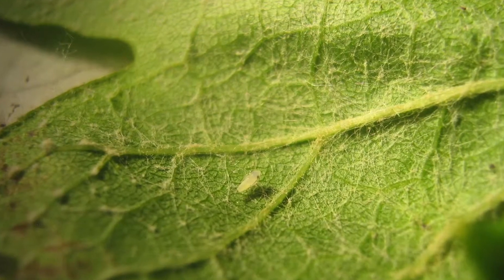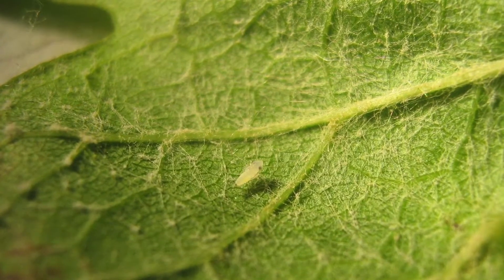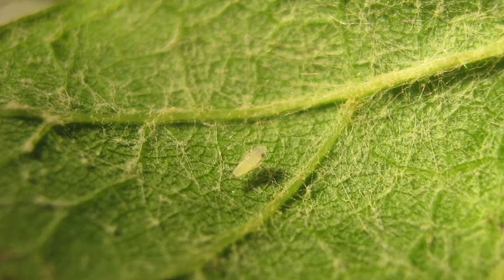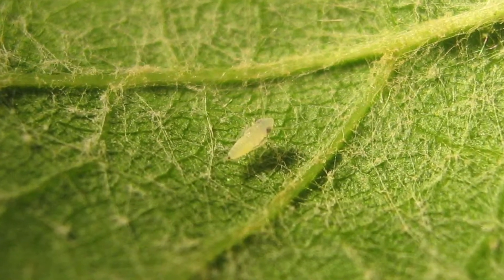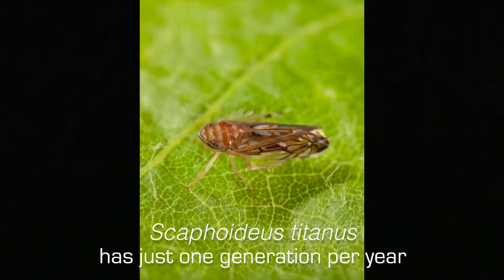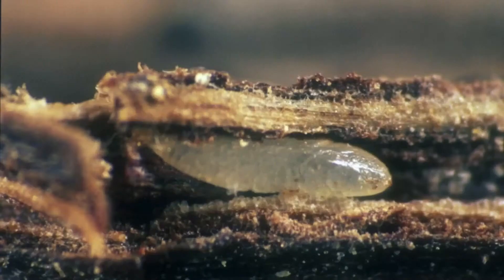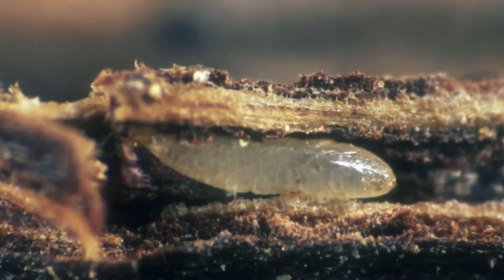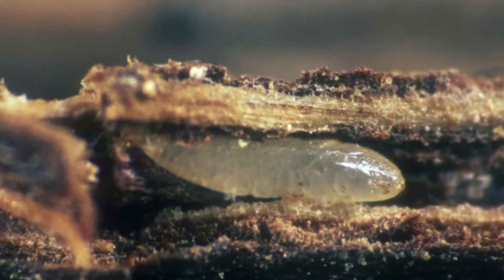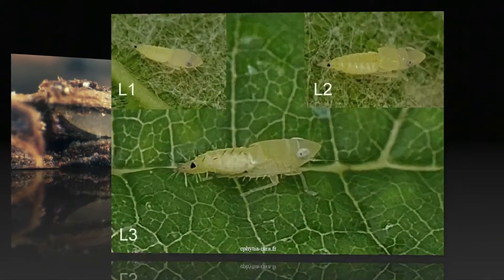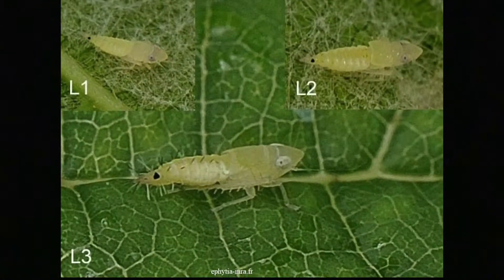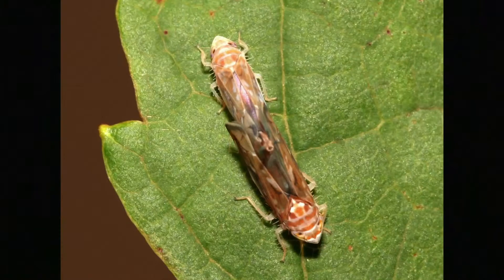Scaphorideus titanus' life cycle is entirely on the vine. It lives, eats, and reproduces on the lower part of the leaf. It has just one generation per year. It overwinters as an egg below the bark, and then in the middle of spring it hatches. After five juvenile forms it becomes an adult, which is the mobile form able to fly.